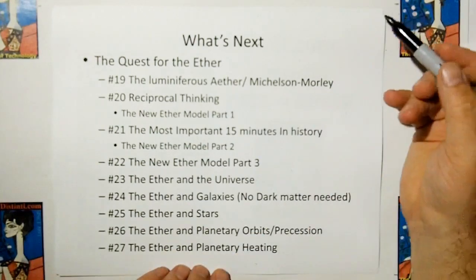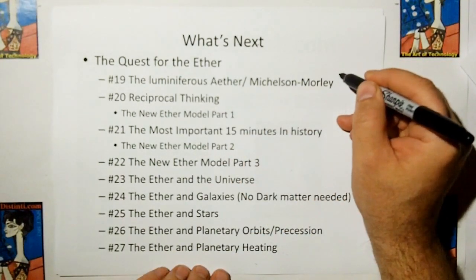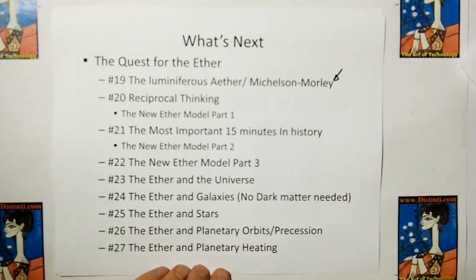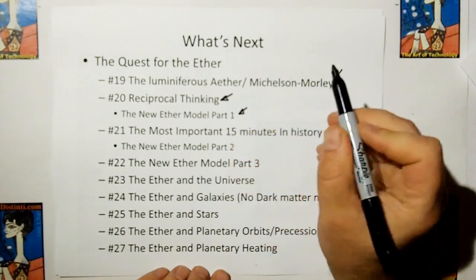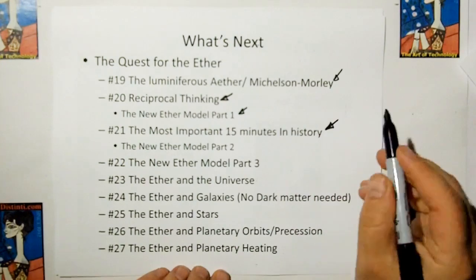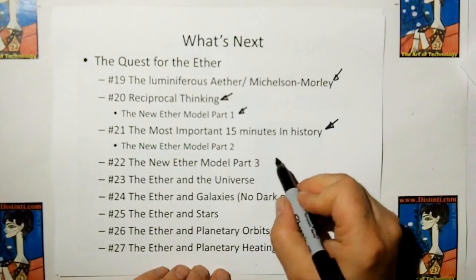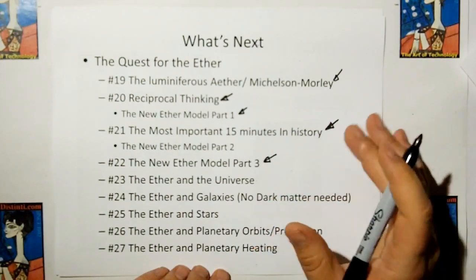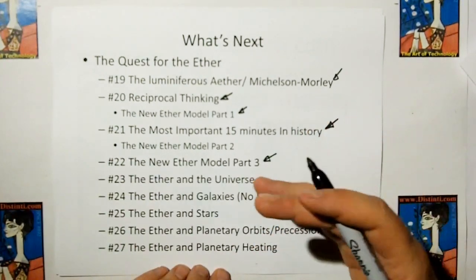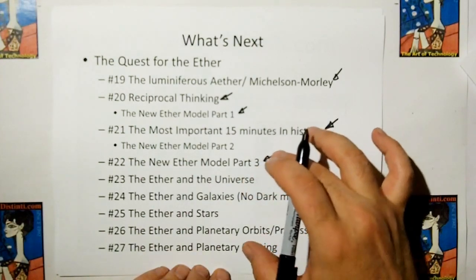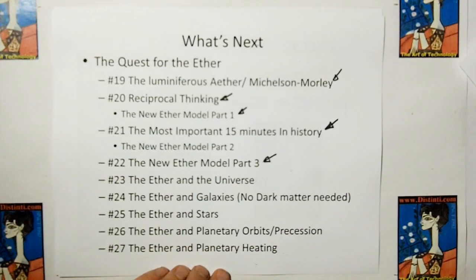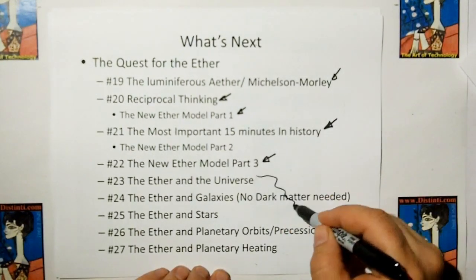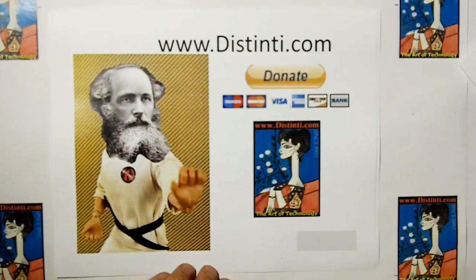So what's next? Video 19, we're going to have the history lesson of the luminiferous ether and the Michelson-Morley experiment. Number 20, we're going to derive the new ether model by showing you how to do reciprocal thinking. 21 is going to be the most important 15 minutes in the history of science, in my opinion. We're going to complete the new ether model. Well, not complete it. The items we need to start talking about the universe, galaxies, and stars. Then we're going to start talking about Distinti's universe so you can read those. Thank you very much.